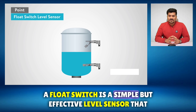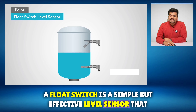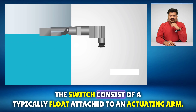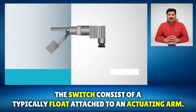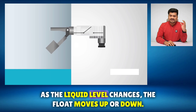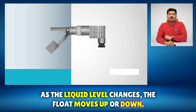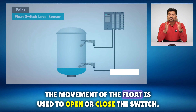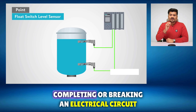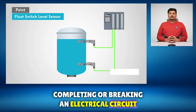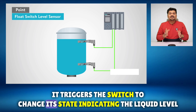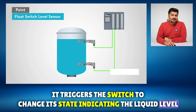A float switch is a simple but effective level sensor. The switch consists of a float attached to an actuating arm. As the liquid level changes, the float moves up or down. The movement of the float is used to open or close the switch, completing or breaking an electrical circuit. When the float is at a certain level, it triggers the switch to change its state, indicating the liquid level.